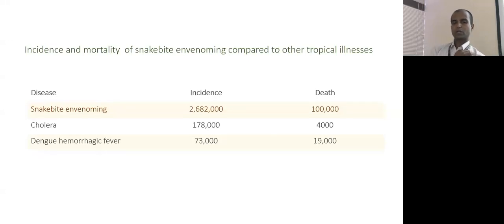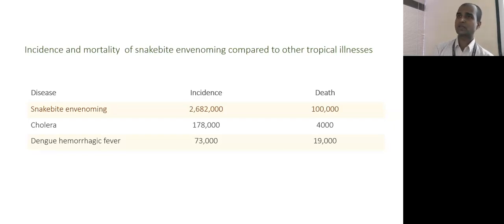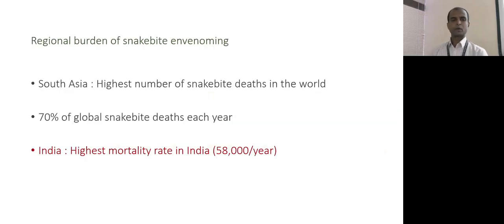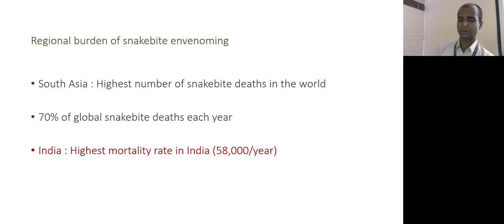Compared to other tropical illnesses like cholera and dengue, snake bite has higher incidence and death numbers. That is why WHO has listed snake bite as a neglected tropical disease. South Asia has the highest number of snake bite deaths in the world, with 70% of global snake bite deaths occurring each year in this region. India has the highest mortality rate, accounting for almost 60,000 deaths per year.